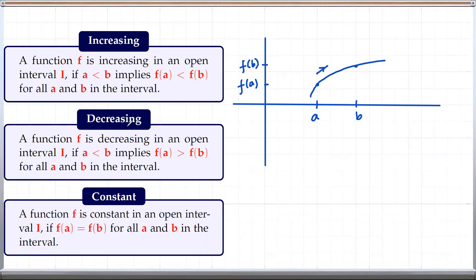The same thing with decreasing. A function is decreasing if for any a less than b we have f(a) greater than f(b). So in this case we require f(b) to be below f(a), so we can have f(b) over here. So the graph will look like this — sloping downward. So this will be decreasing.